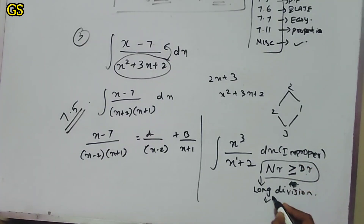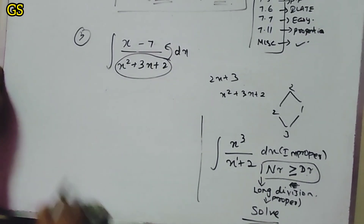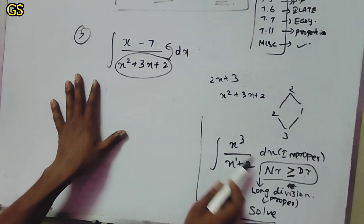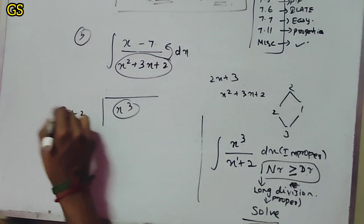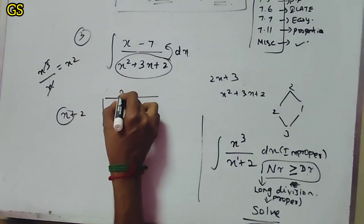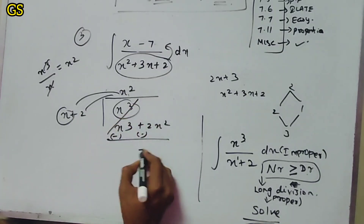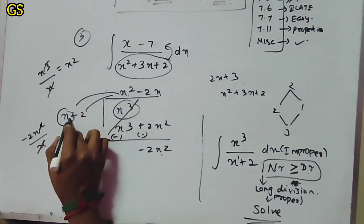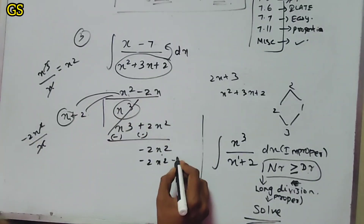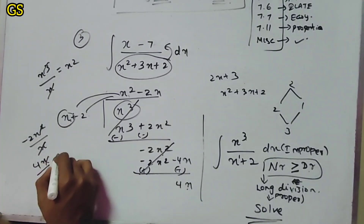This is the long division. Improper fraction — perform long division to get proper fraction. I will solve the proper fraction. Take the integration. The numerator and denominator — the question is this. Take x cubed, x plus 2. First term divided by first term: x cubed divided by x is x squared. Then x squared times (x+2) gives x cubed plus 2x squared. Subtract: minus 2x squared. Divide again: minus 2x. Then minus 2x times (x+2) gives minus 2x squared minus 4x. Subtract: 4x. Then 4x divided by x is plus 4.